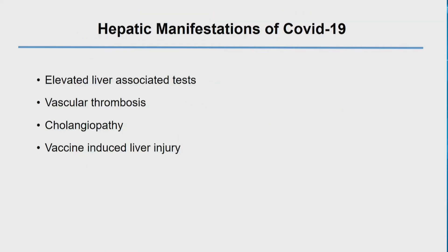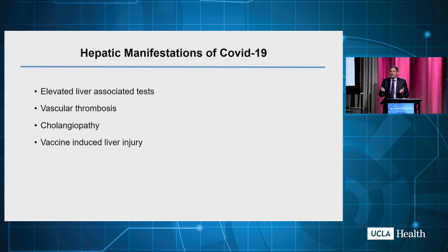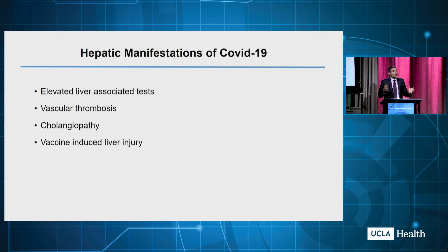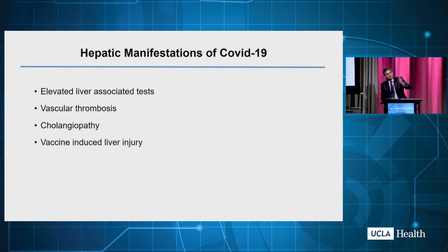Let's get now to the liver injury patterns. Hepatic manifestations can be put in different buckets. We can talk about how COVID raises liver enzymes as a manifestation of the COVID infection. We can talk about thrombosis — we all heard about how COVID caused an increase in the prothrombotic state. We're going to talk about cholangiopathy and how COVID could precipitate a secondary cholangitis that's deadly. And lastly, we're going to talk about something related to vaccines.